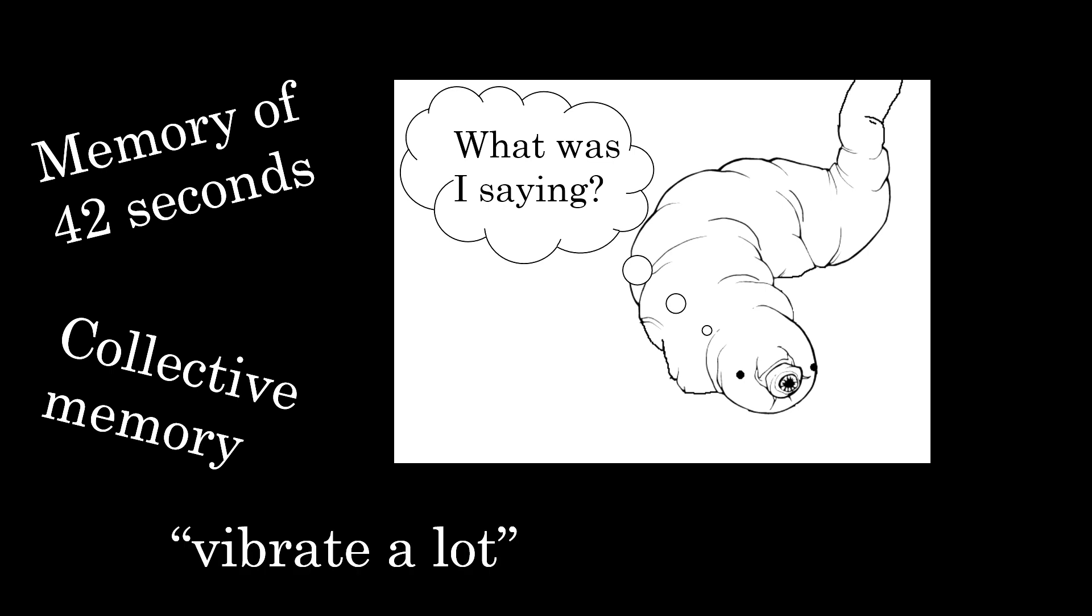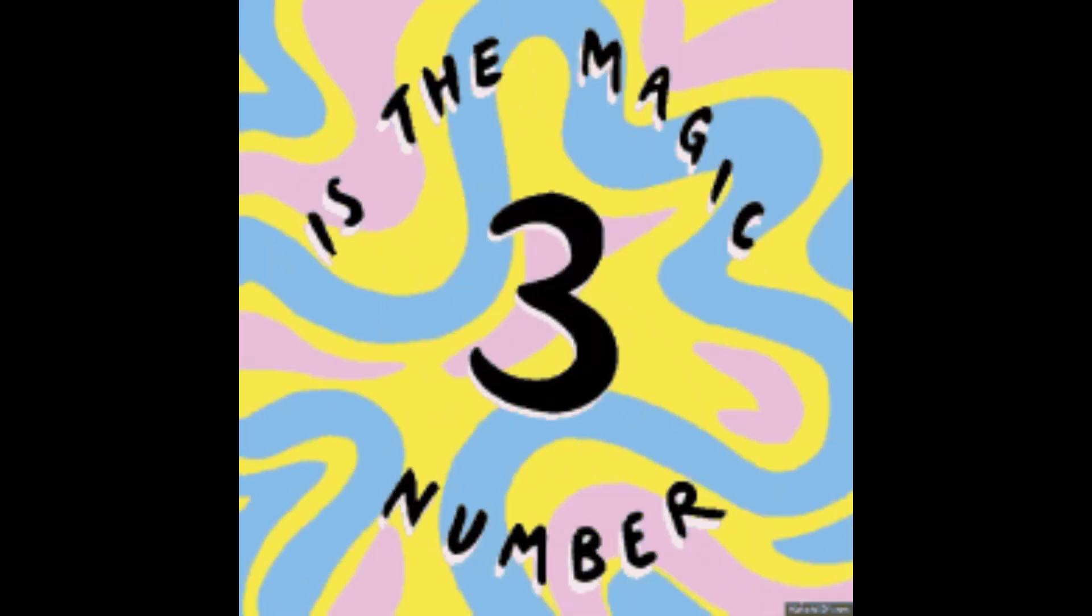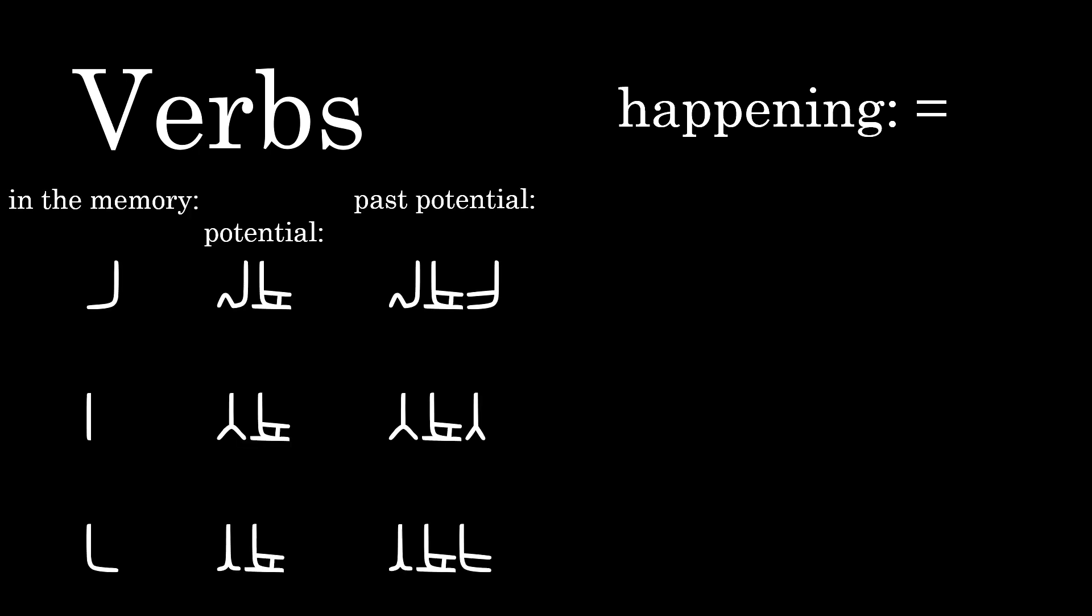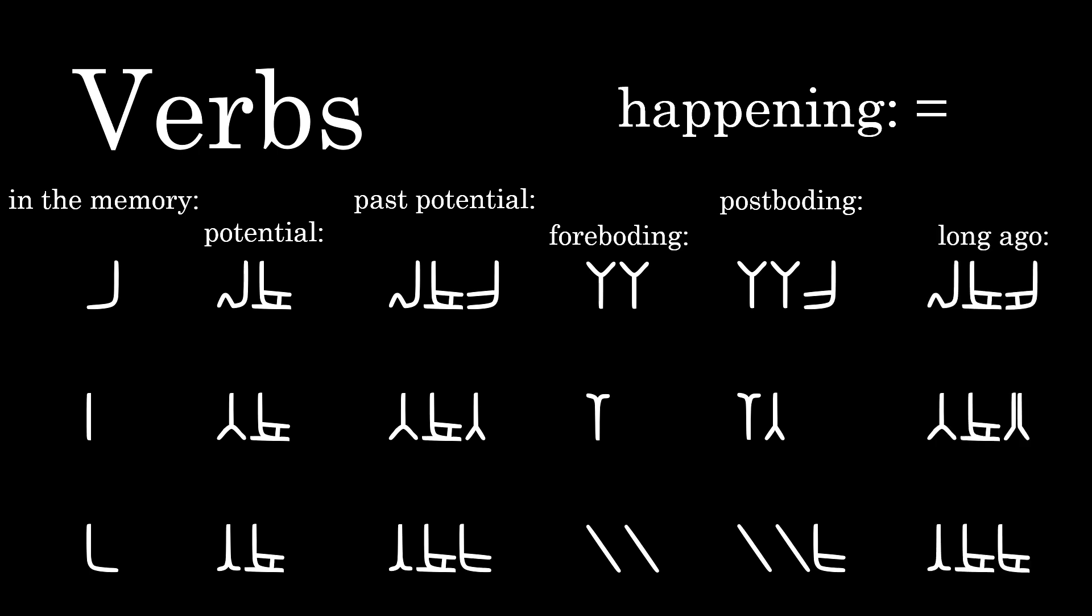Verbs are conjugated in 7 ways. Why? Because, you know, 3 is the magic number. Happening is the base form. The others are formed with prefixes, inner memory, potential, past potential which is out of memory, foreboding for which is going to happen, postboding for which is quite sure it happened before, and long ago, which is knowledge that comes from previous generations and is always potential.